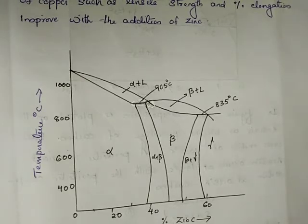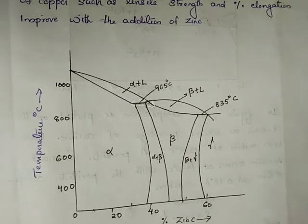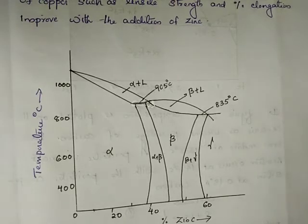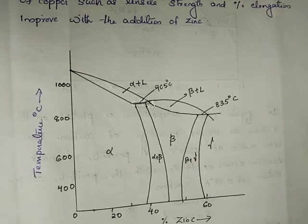There are three phases: alpha, beta, and gamma regions. When the two components, Cu and Zn, are dissolved, we can have a single solid phase. In this case, the liquid phase is completely dissolved, but in the solid phase there is no complete solubility. In the third phase, we have alpha phase, beta phase, and gamma phase.